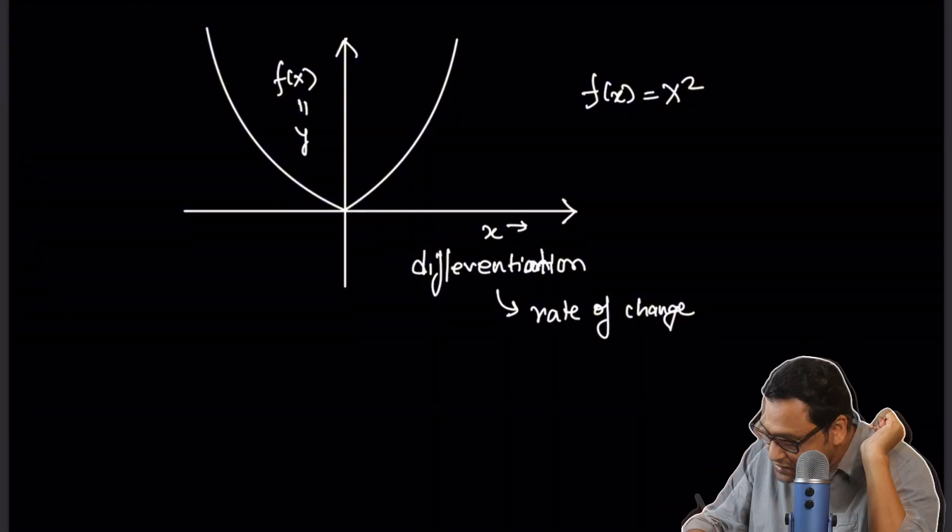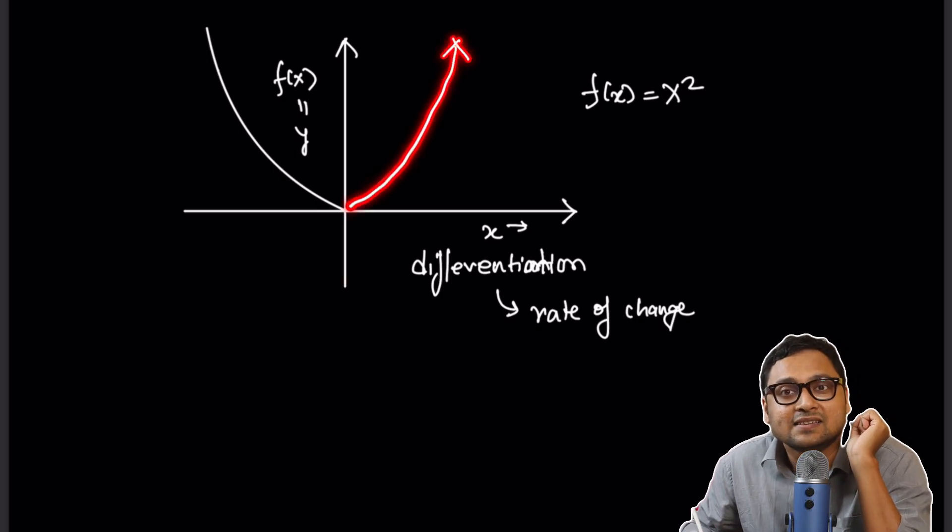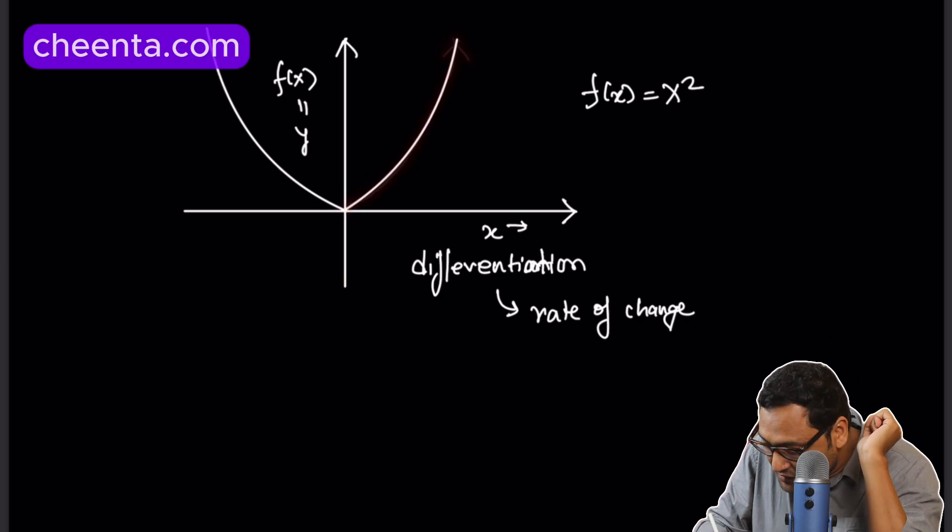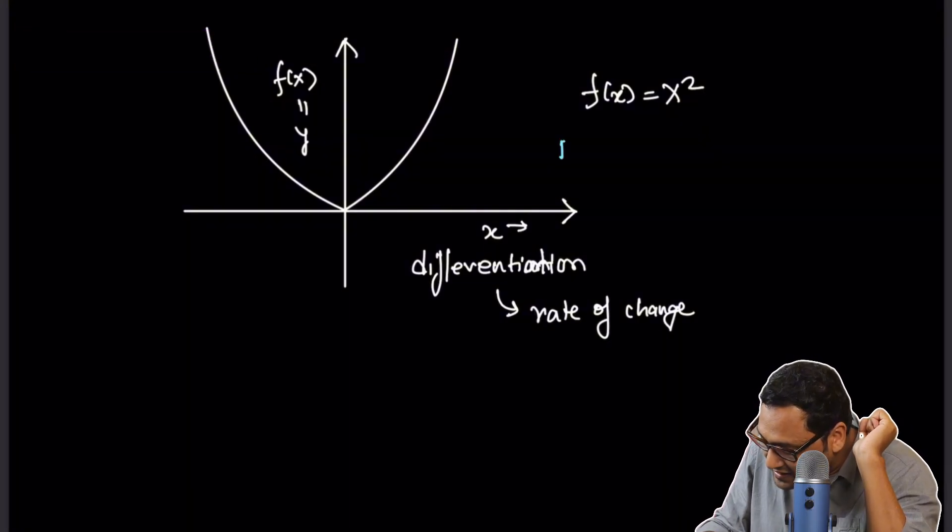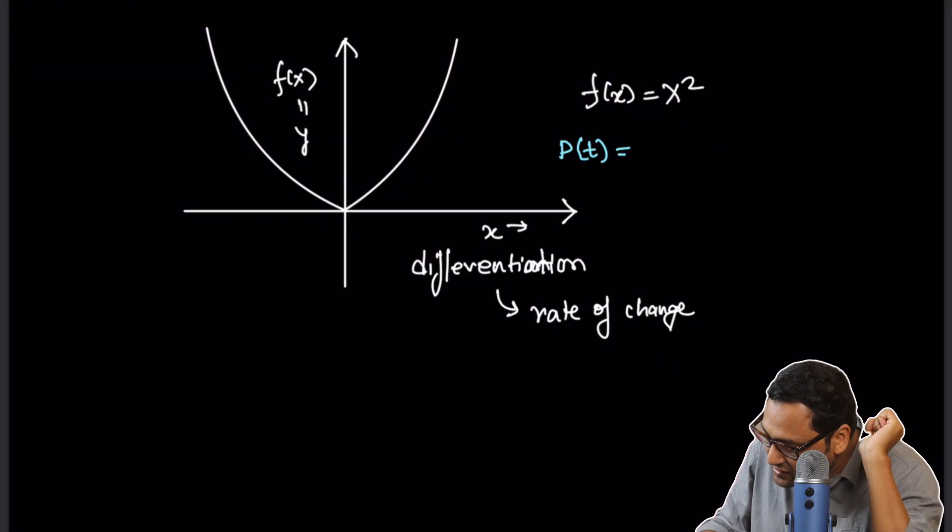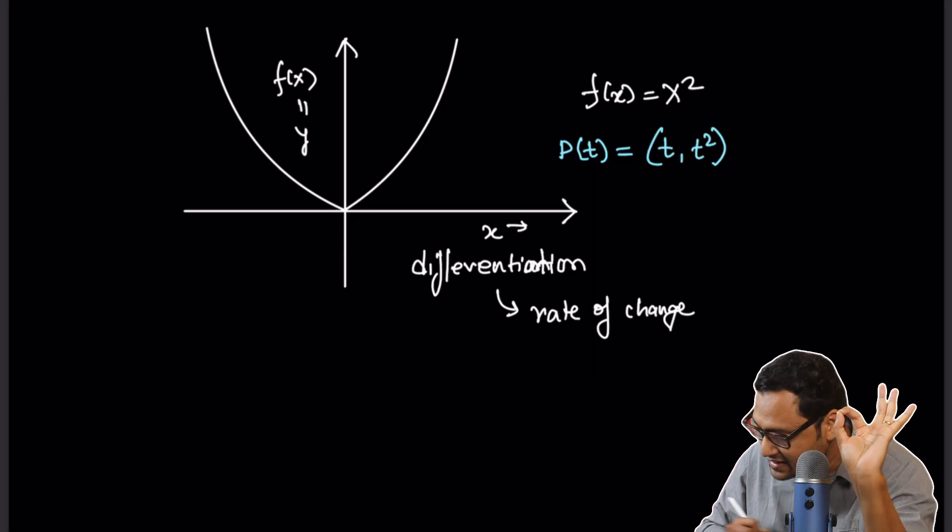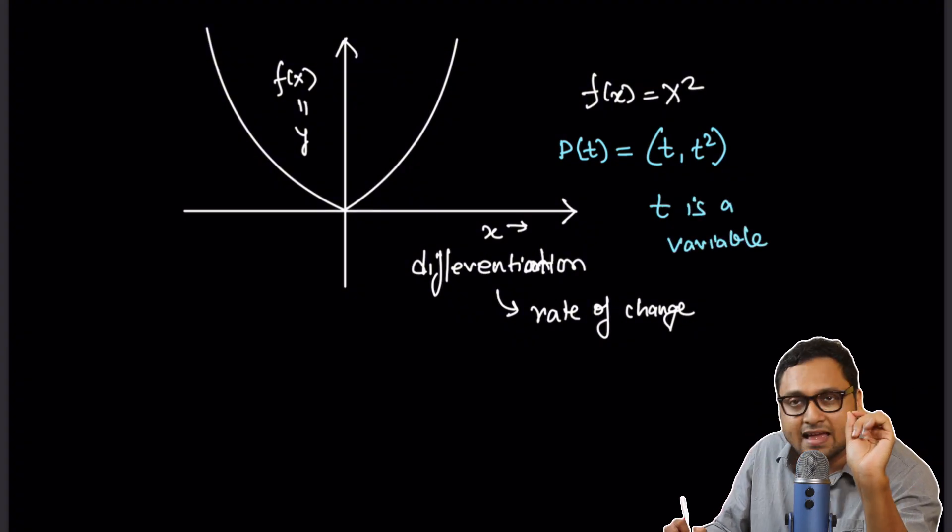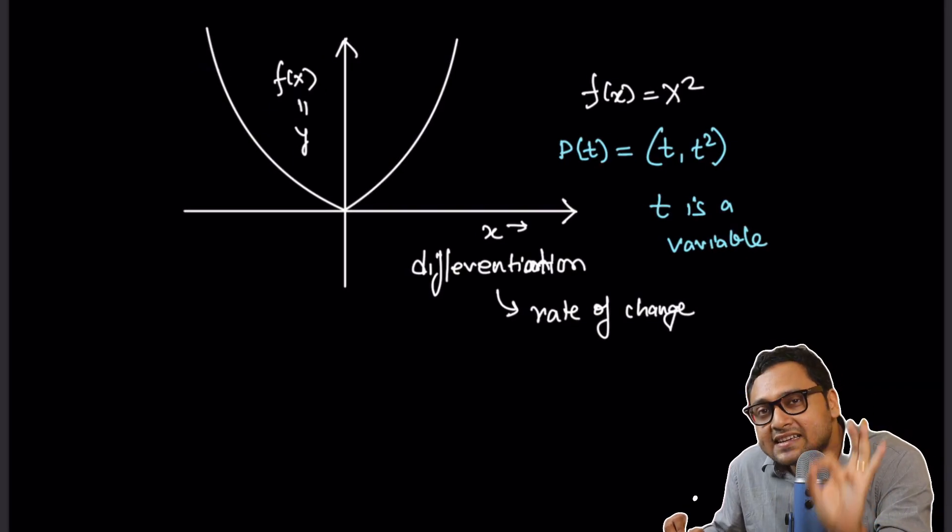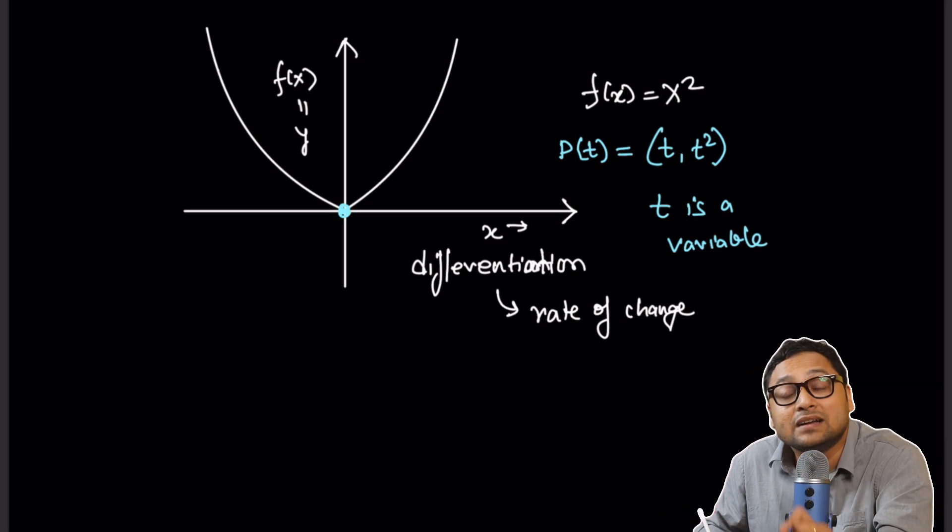Let's try to do it. So what I will use is, I will use a parametric form of this parabola. What is the parametric form? Well, in this particular case, I will write it as p(t) equals (t, t squared), which basically means t is a variable, and for every value of t, I am plotting the point (t, t squared).